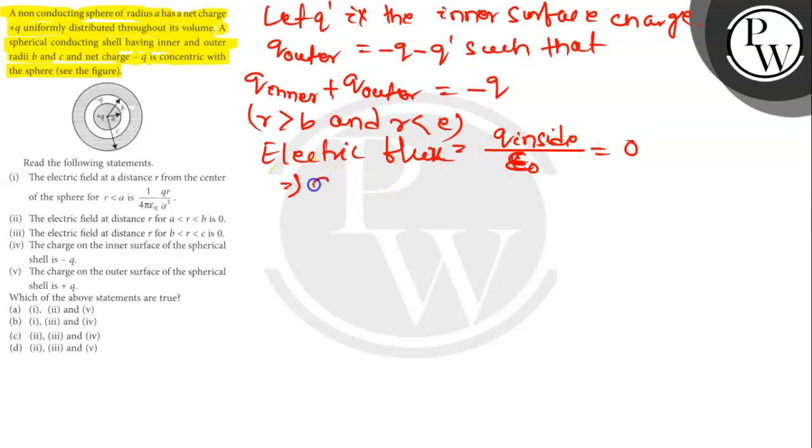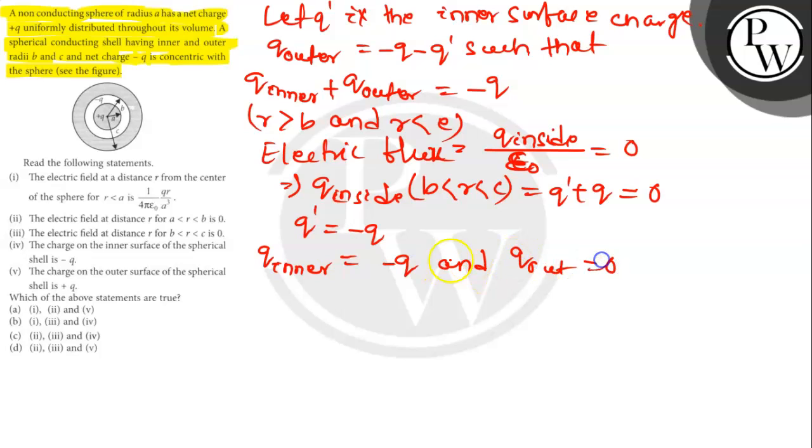So Q inside for B less than R less than C is equal to Q1 plus Q equals to Q. Q inner is equal to minus Q and Q outer is equal to 0.